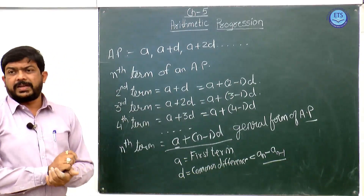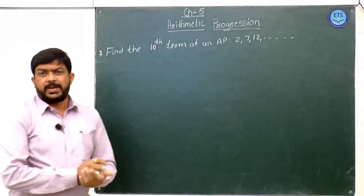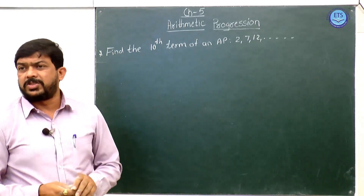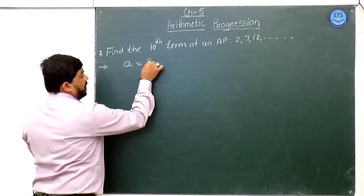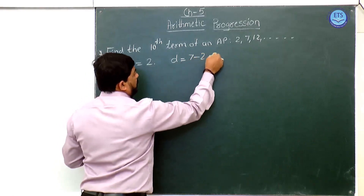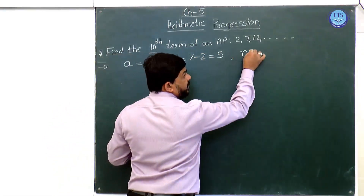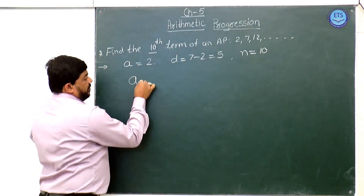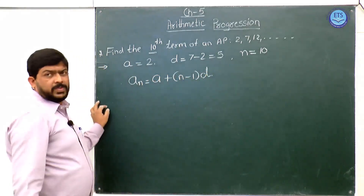Now let us take one example to see how we can use this general term. Find the 10th term of an AP: 2, 7, 12 and so on. Here your first term a = 2, the common difference d = second term minus first term = 7 minus 2 = 5, and we are asked to find the 10th term, so n = 10.